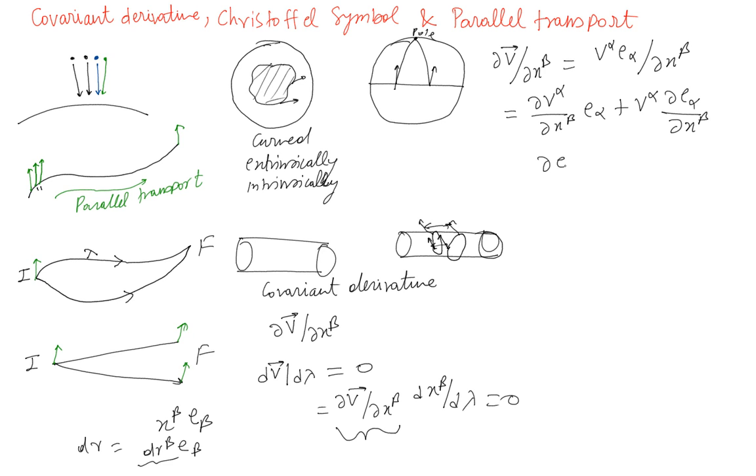And this depends on the chosen coordinate system. This is going to be gamma mu alpha beta times e mu and these are called Christoffel symbols. This depends on the chosen coordinate systems.